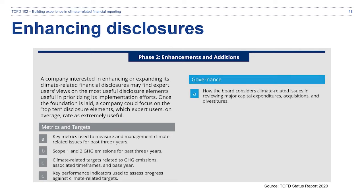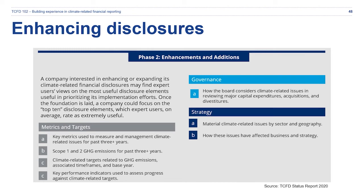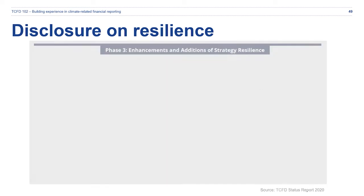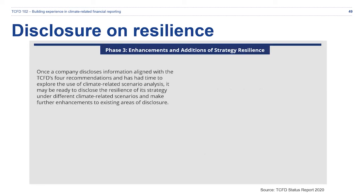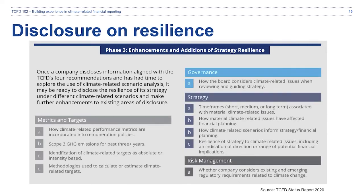While governance was a key factor in phase one, in phase two companies can go deeper by determining how major capital expenditures may be impacted by climate-related factors. It's also the moment to enhance the integration of climate-related risks and opportunities into the strategy, and to introduce metrics and targets such as scope one and two GHG emissions and key performance indicators related to your emissions. In phase three, you can look to further enhancements and adding strategy resilience. This is recognized by TCFD as being a very challenging area, so it can be approached once the foundation and initial enhancements are in place. All four categories — governance, strategy, risk management, and metrics and targets — should be brought in at this phase.